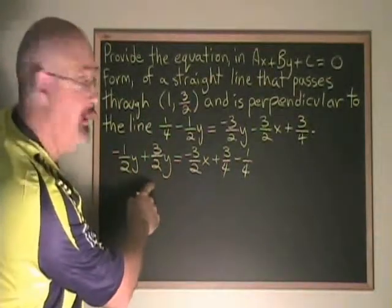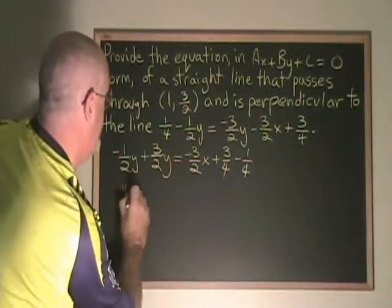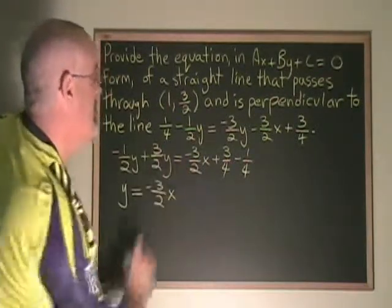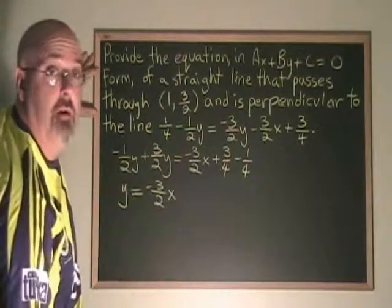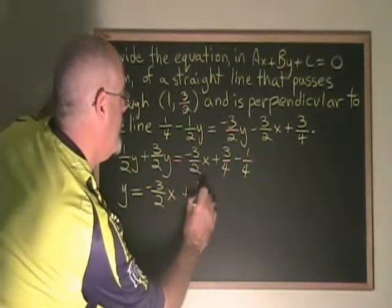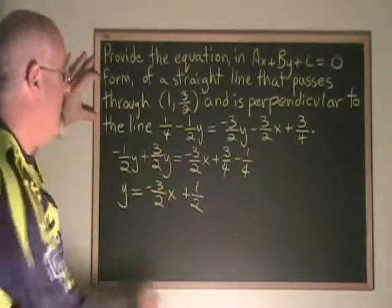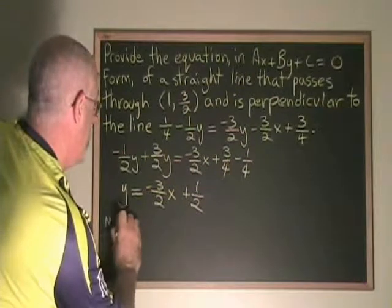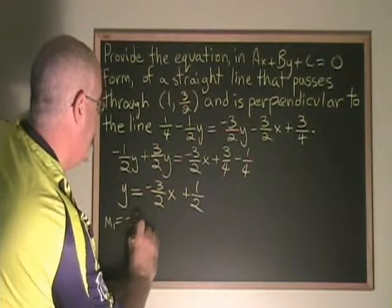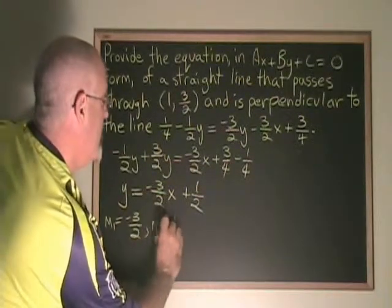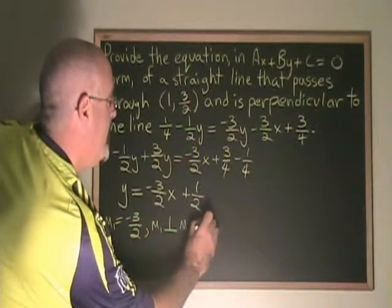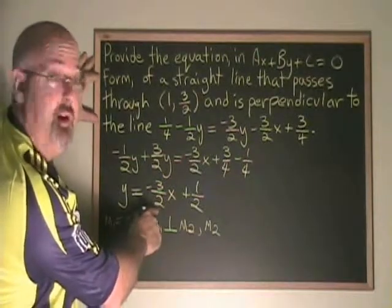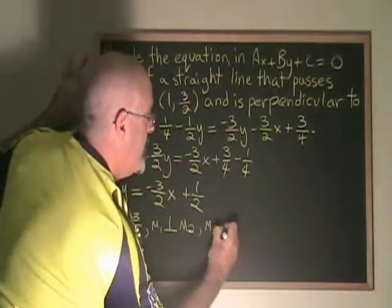Negative 1/2 y plus 3/2 y equals 1y. Negative 3/2 x is the only term with x, and then 3/4 minus 1/4 is 1/2, so we have y equals negative 3/2 x plus 1/2. Our slope is already in the form of a fraction. M1 is equal to negative 3/2. M1 is perpendicular to M2. Therefore, M2 is equal to the negative reciprocal of negative 3/2, which is positive 2/3.